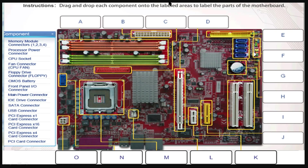The default components for the simulation are: memory module connectors 1, 2, 3, 4; processor power connector; CPU socket; fan connector; CPU fan; floppy drive connector; floppy; CMOS battery; front panel input/output connector; main power connector; IDE drive connector; SATA connector; USB connector; PCI Express X1 card connector; PCI Express X16 card connector; PCI Express X4 card connector; and PCI card connector.